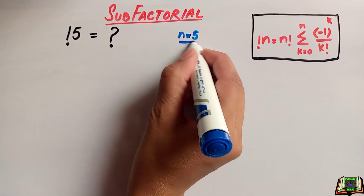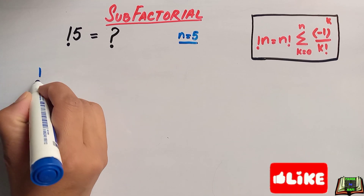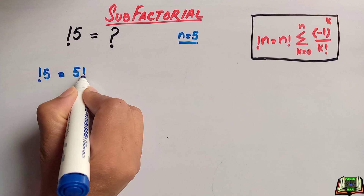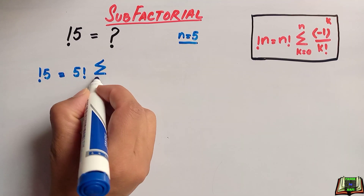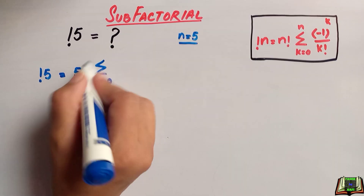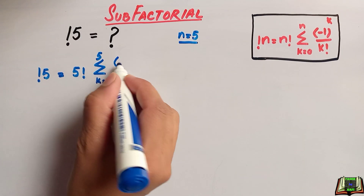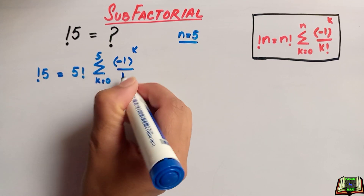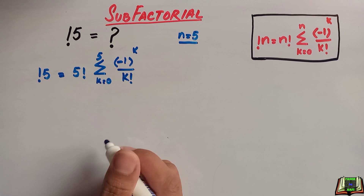We are going to use this formula where n is equal to 5. So sub-factorial of 5 equals 5 factorial times sigma, where k goes from 0 to 5, of minus 1 to the power k over k factorial. In the next step we will compute 5 factorial.